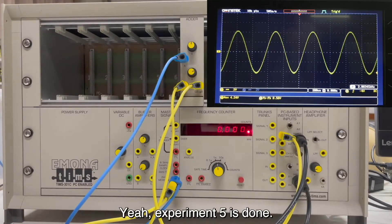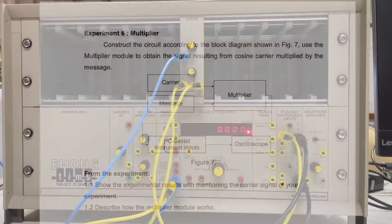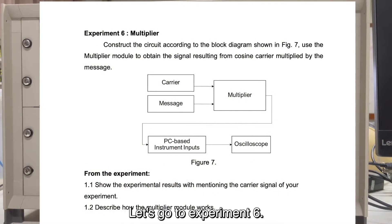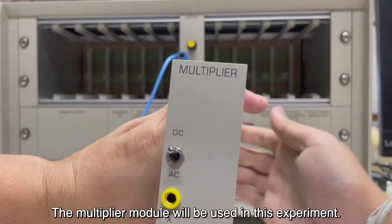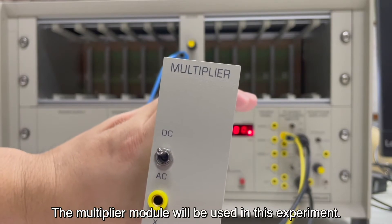Experiment 5 is done. Let's go to Experiment 6. This multiplier module will be used in this experiment.